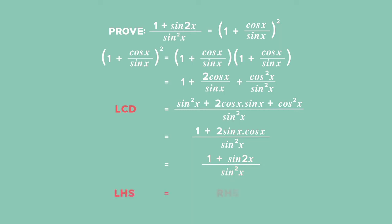So, the left-hand side equals the right-hand side. Hence, you have proved the identity 1 plus sin 2x all over sin squared x is equal to 1 plus cos x over sin x in brackets all squared.